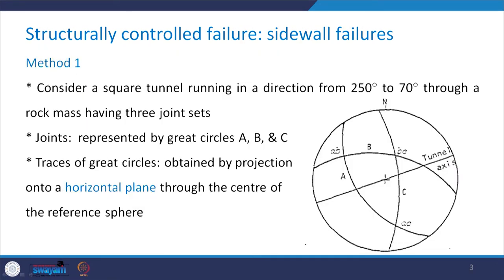In the first method, I take an example of a square tunnel running in the direction from 250 degrees to 70 degrees through a rock mass which has 3 joint sets. These joints are represented by great circles A, B and C drawn in the corresponding stereographic projection. As the tunnel is running from 250 to 70 degrees, this represents the tunnel axis.